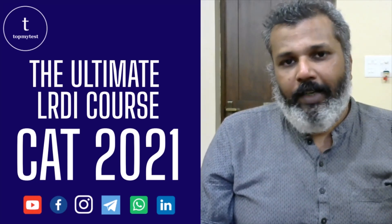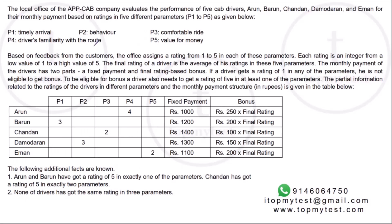Let's get started. The set says: the local office of an app cab company evaluates the performance of five cab drivers — Arun, Barun, Chandan, Damodaran, and Iman (A, B, C, D, E) — for their monthly payment based on ratings on five different parameters P1 to P5. P1 is timely arrival, P2 is behavior, P3 is comfortable ride, P4 is driver's familiarity with the route, and P5 is value for money.